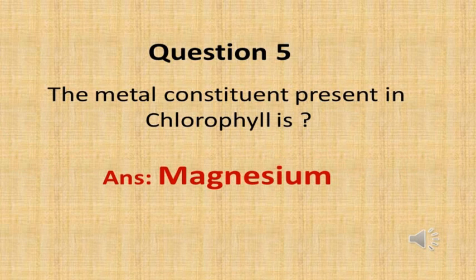The next question is: the metal constituent present in chlorophyll is? Chlorophyll is a plant pigment which gives green color to the leaves.